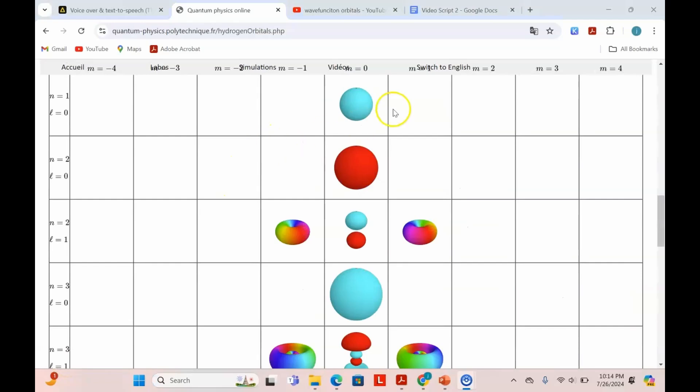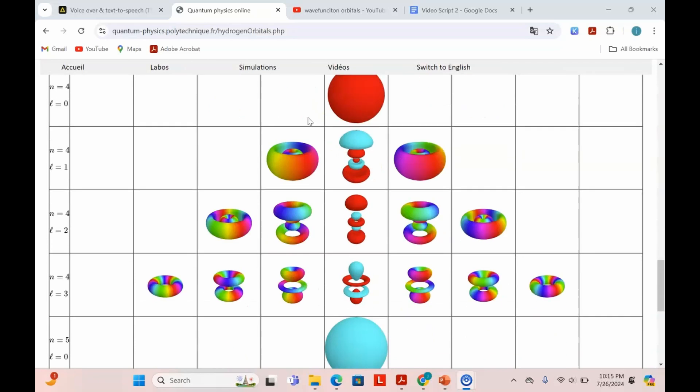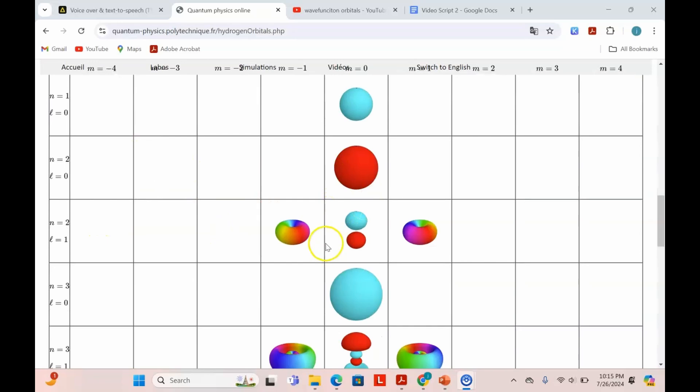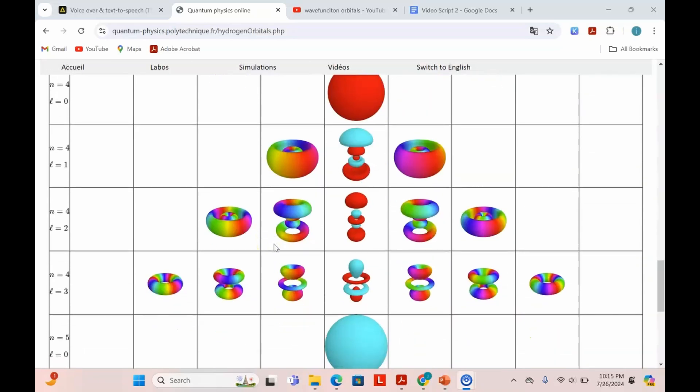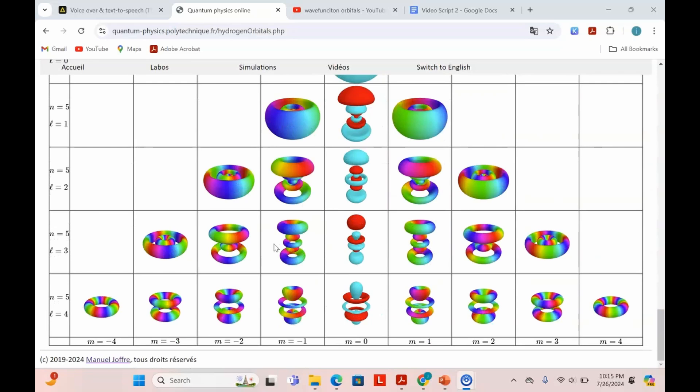If you go to the quantum physics online website, you can see many of these orbitals. This is the n equals 1. These are the n equals 2 orbitals. Here's the n equals 3 orbitals, and there's 9 of them. There's n squared. If we go to n equals 4, there's going to be 16. And n equals 5 should have 25. Look at how beautiful this picture is.